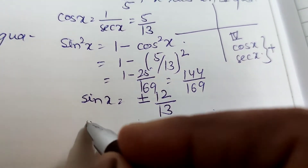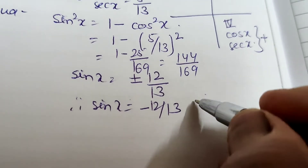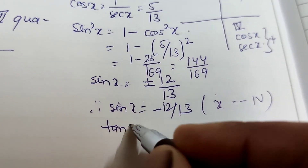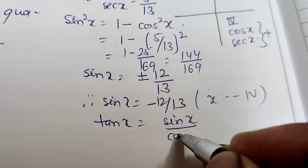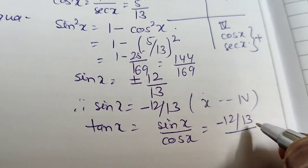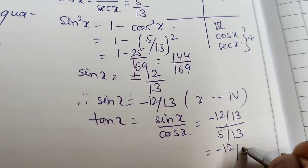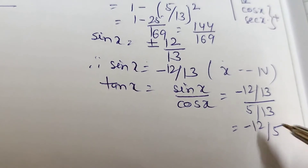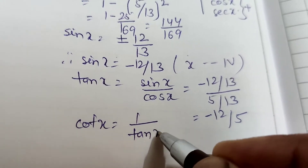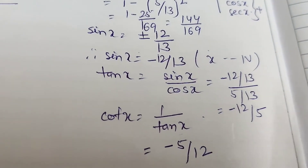So sin x = ±12/13. Since x lies in the fourth quadrant, sin x = -12/13. Then tan x = sin x/cos x = (-12/13)/(5/13) = -12/5. And cot x = reciprocal of tan x = -5/12.